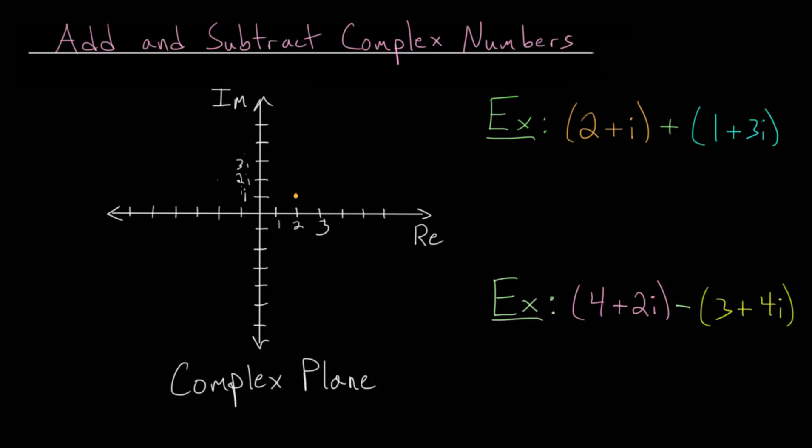Whereas 1 plus 3i, so we go over 1 in the real part, and then up 3i in our imaginary part. So this blue dot, this is where the complex number 1 plus 3i is on the complex plane.